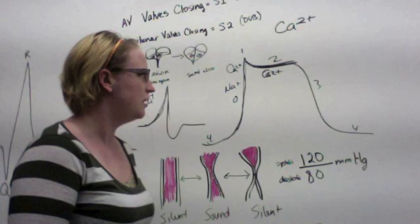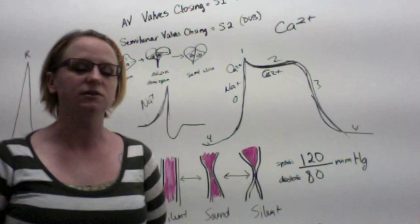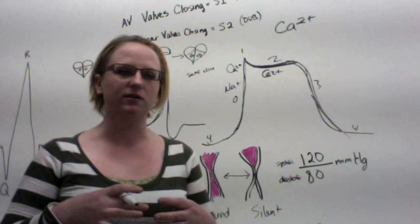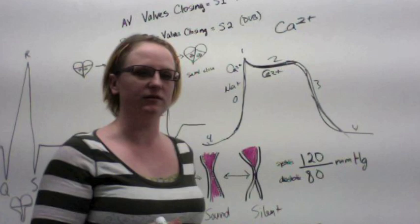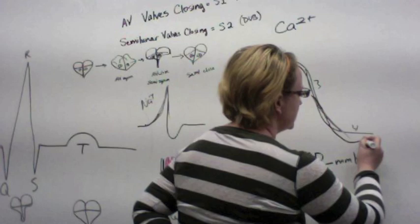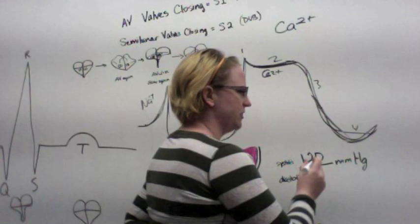Then we have this downstroke, which represents both calcium and sodium leaving the cell or being actively pumped out. In the case of calcium, we could re-sequester it or put it away in the sarcoplasmic reticulum, just like in skeletal muscle. We could put away that calcium or pump it out of the cell, because too much calcium is very toxic for the inside of the cell. Then we have a point where we actually get more negative than the normal resting potential.